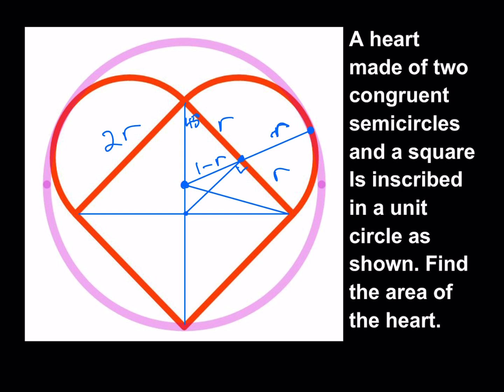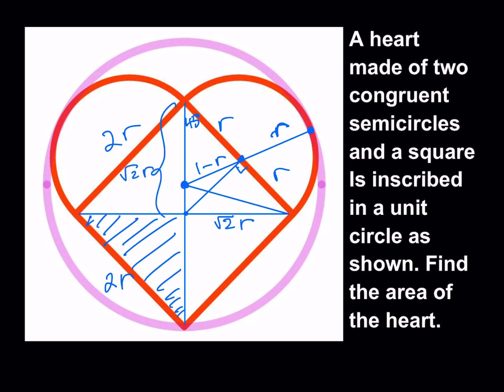I have a couple more lengths to find. Since the hypotenuse of this right triangle is 2R, and not only is it a right triangle but it's also isosceles, the legs should each be the square root of 2 times R. So this whole length here is √2R.